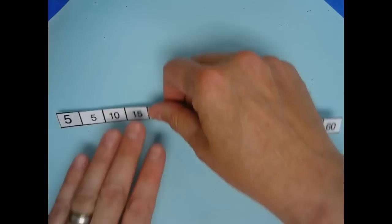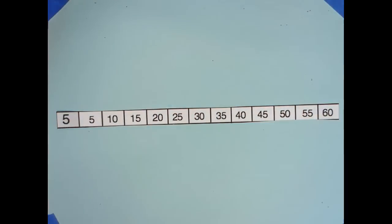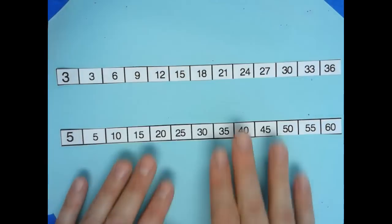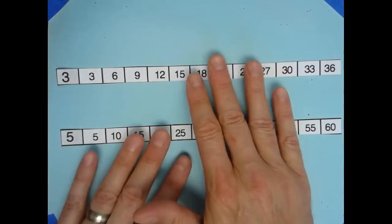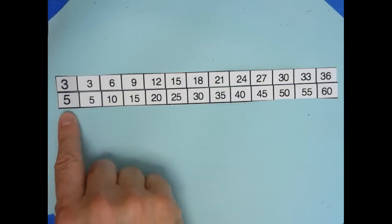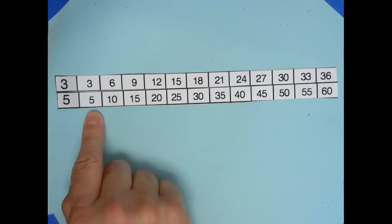We can take a multiplication chart, and let's say here we've got the five strip that I've cut out and here's the three strip that has been cut out. If we want to know what some of the ratios look like in a three to five ratio, the first one would be three to five.